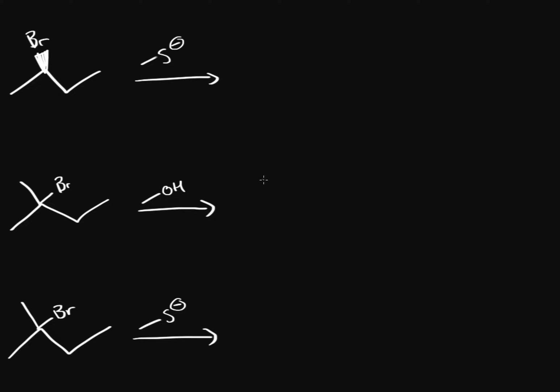We're going to compare SN2 and SN1 reactions with respect to steric hindrance. The question is: how much steric hindrance is too much? How do we know when steric hindrance causes the reaction to switch from SN1 to SN2, or SN2 to SN1?